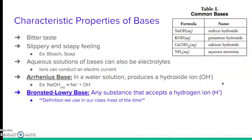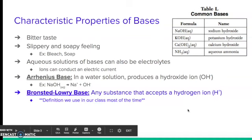Now we have some properties of bases. These have a bitter taste; they're slippery and soapy. Examples include bleach or soap. Also, when they are in aqueous solutions, they can conduct electricity, so they are also known as electrolytes. With our two definitions: an Arrhenius base in a water solution produces a hydroxide ion. For example, sodium hydroxide in an aqueous solution makes sodium and hydroxide ions. The Bronsted-Lowry base definition expands this — it says any substance that accepts a hydrogen ion.